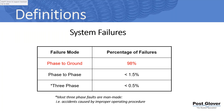Looking at an industrial study of system failures, the point is that the vast majority of all your faults are phase to ground. That's important because when we talk about resistance grounding, which uses a neutral grounding resistor connecting between the neutral and the ground, we're impacting the phase-to-ground portion of that system. So that 98% is what we deal with.